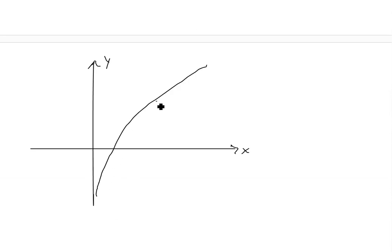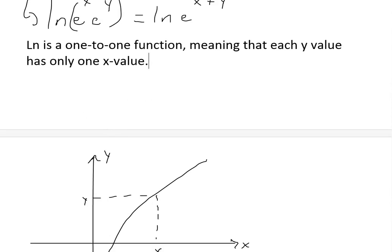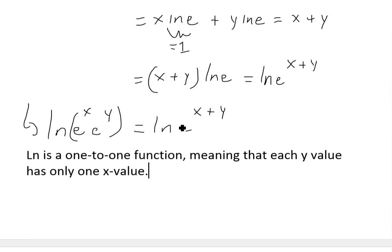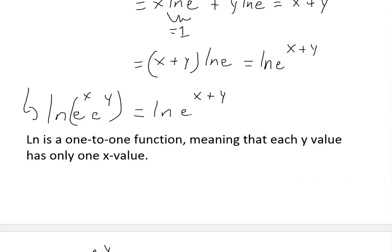As you can see, every x value has only one y value. You can't have two different values of y for any given x. So if these equal—if the y values are equal—then the two insides have to be equal to each other because it's a one-to-one function.